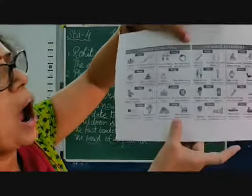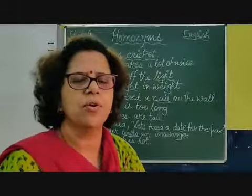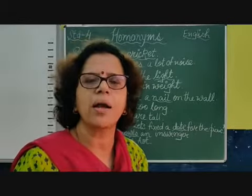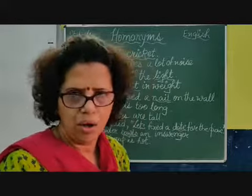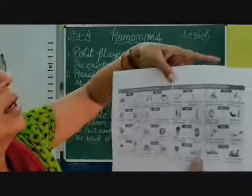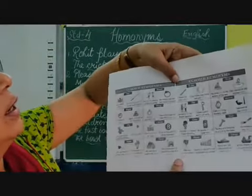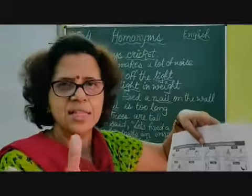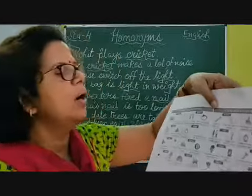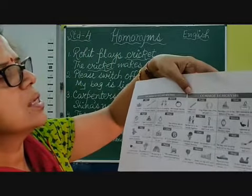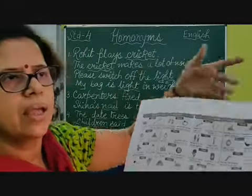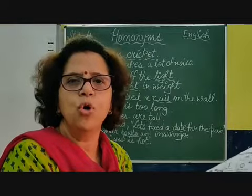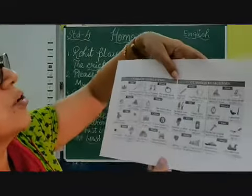Coming next is 'park' — a park is where children play or people go and sit. And 'park' also means parking the car or parking vehicles. 'Ruler' — I have a 12-inch ruler, those scales. And a ruler is like a king: 'He ruled his country, so he is a ruler.'